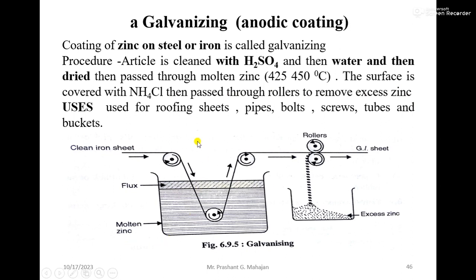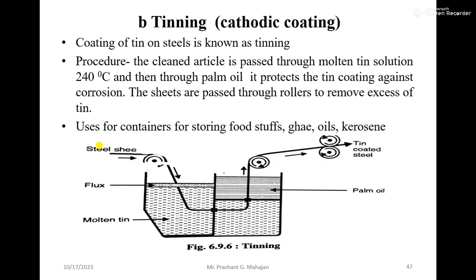NH4Cl flux is used on the surface of molten zinc to prevent its oxidation — since oxygen is present in the atmosphere, zinc would react with oxygen and form metal oxide on the coating. Galvanized products are used for roofing sheets, pipes, bolts, screws, tubes, and buckets. Zinc is placed above iron in the galvanic series, which is why galvanizing is an anodic coating.